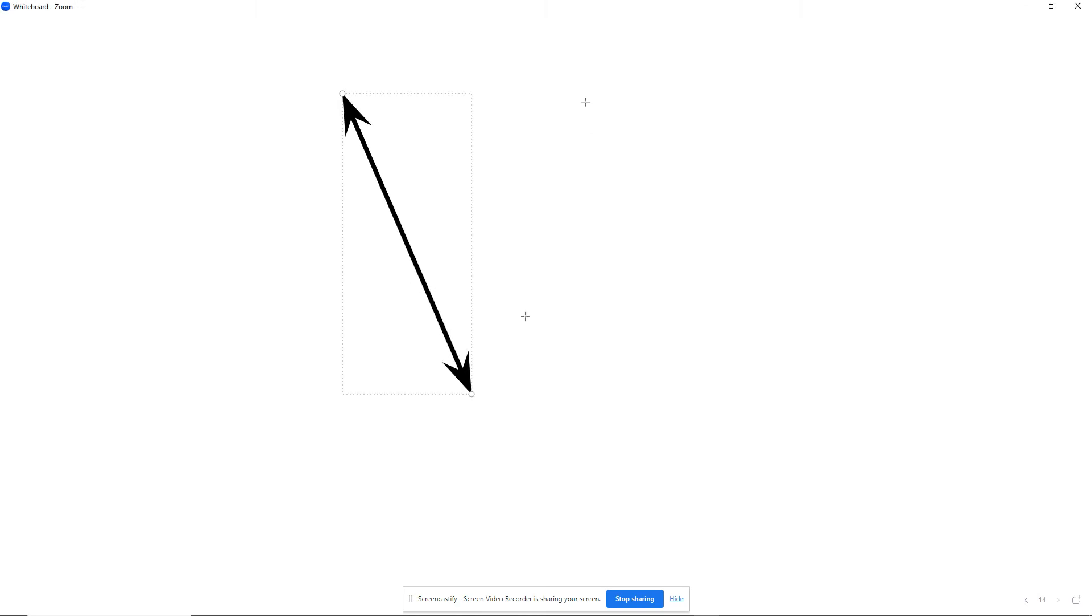All right, so I've got two parallel lines and I've got the transversal which is running through both of them. At the same time, I've got this angle here which is 4x plus 15.